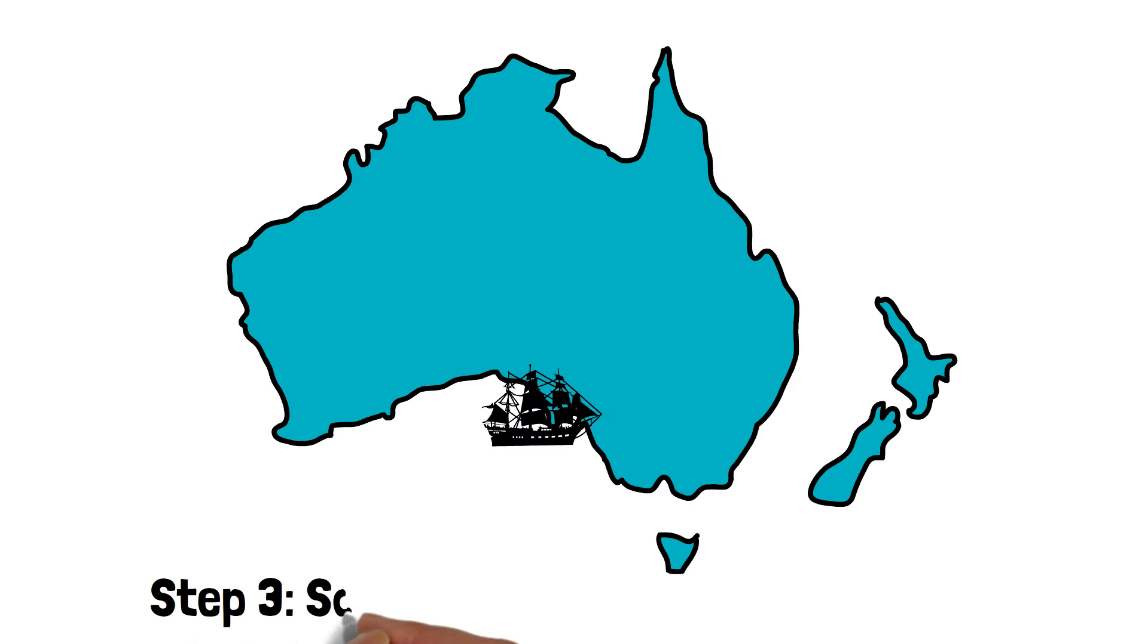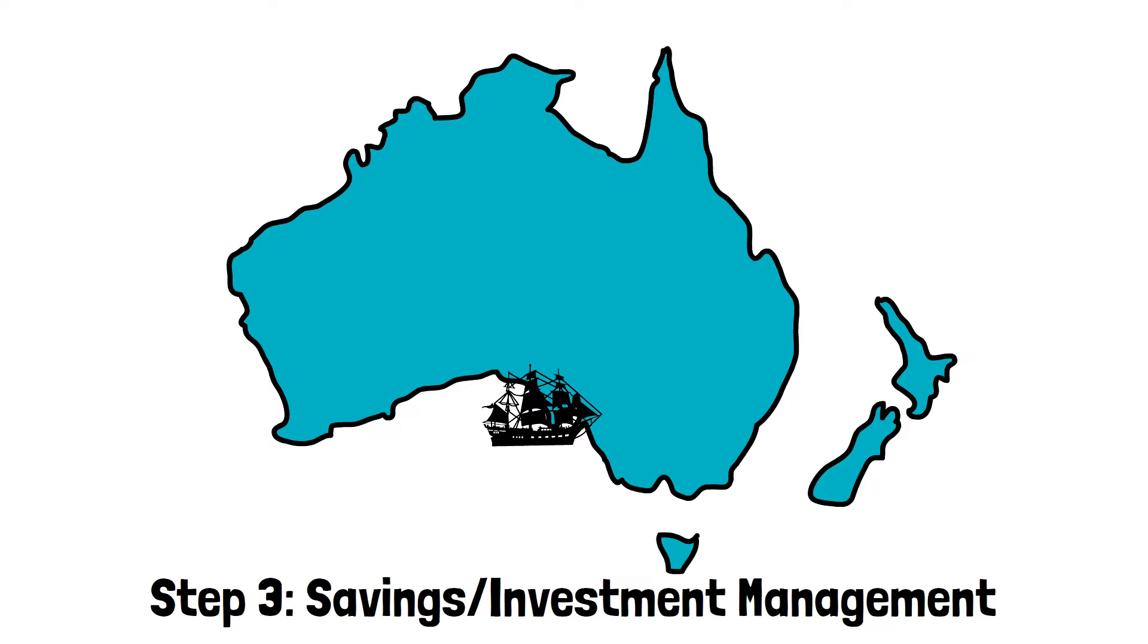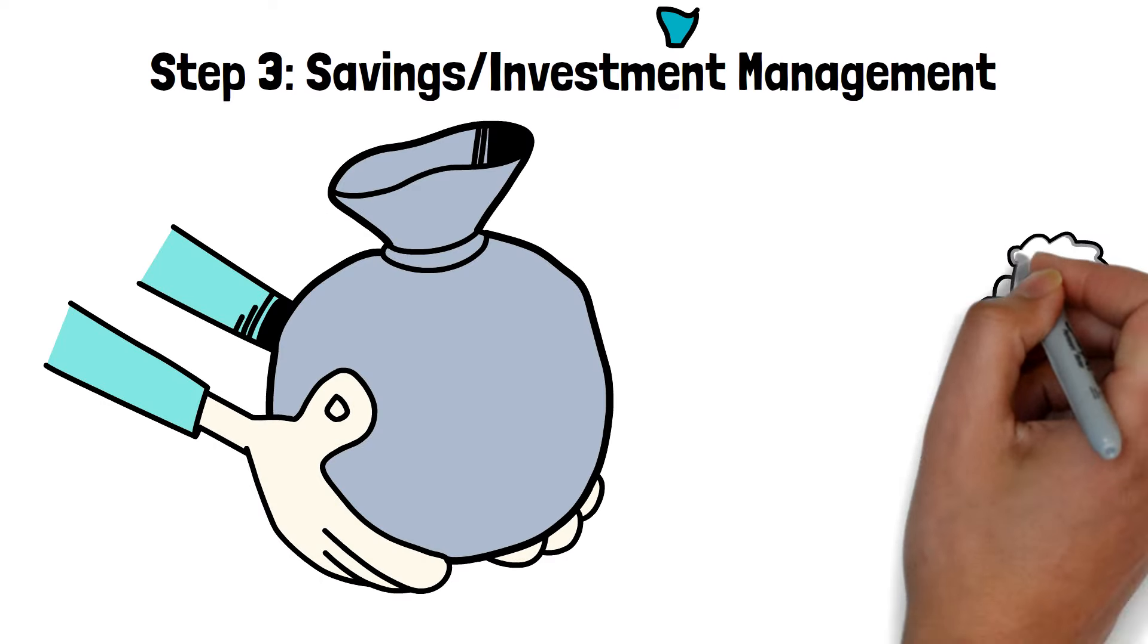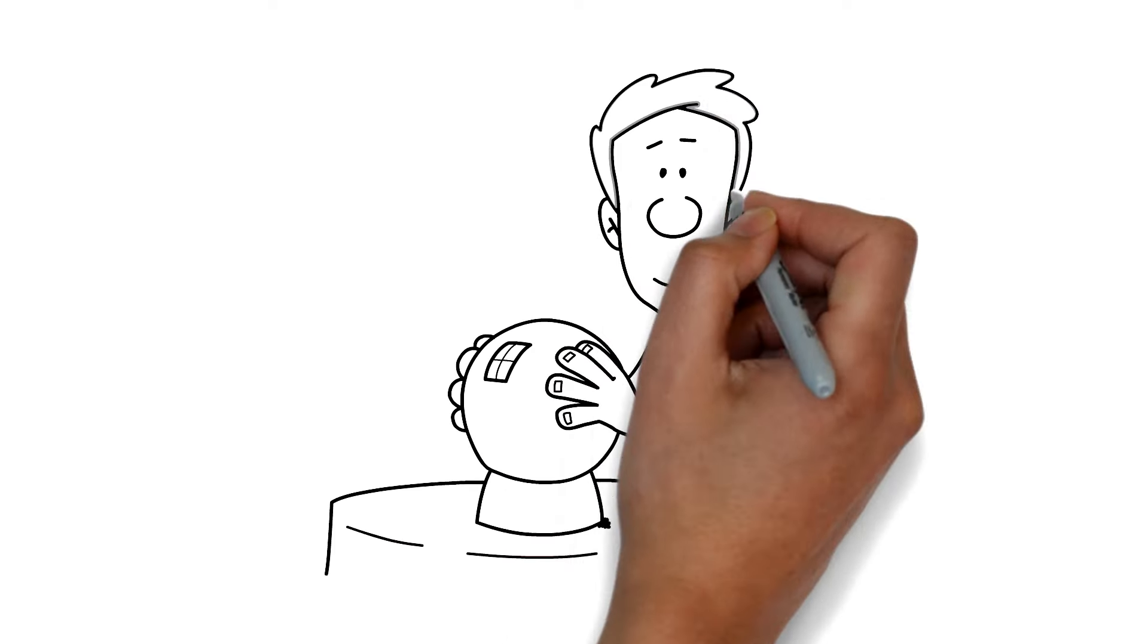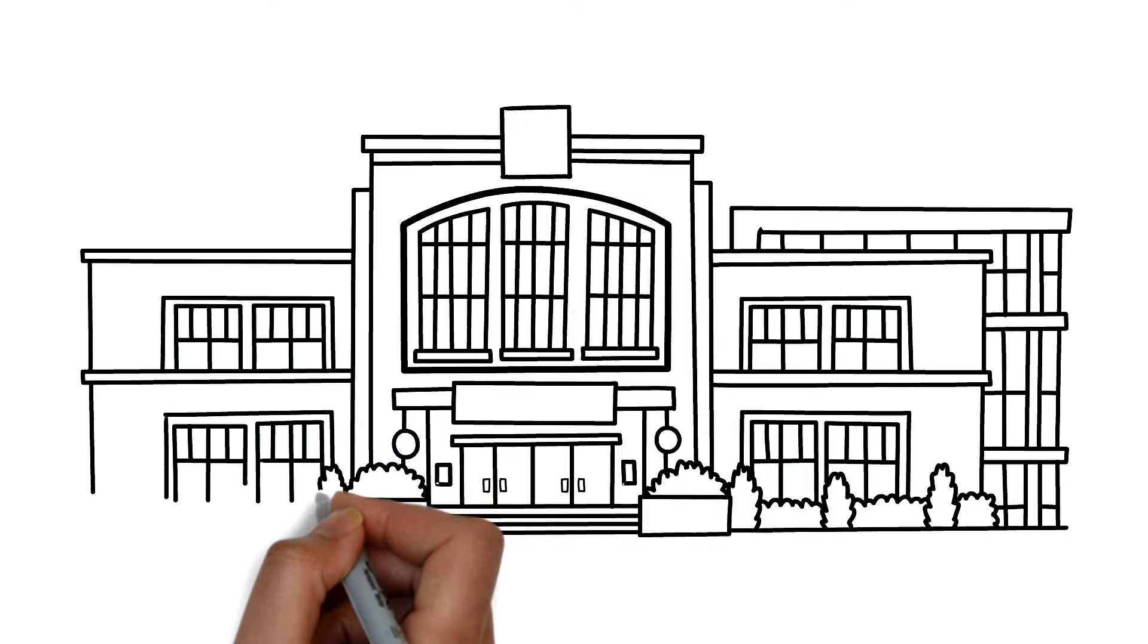Step three, savings and investment management. The third step is all about plotting a course for your future with savings and investment management. You'll want to make sure you've got enough saved up for your golden years, your kids' education